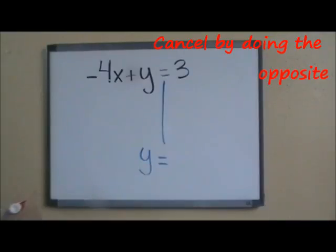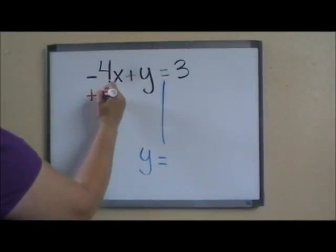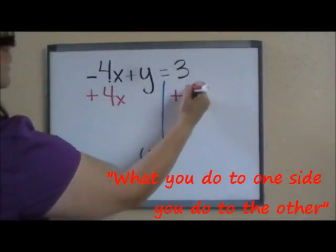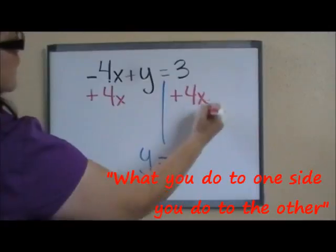The opposite of negative 4x is a positive 4x. And remember what you do to one side, you have to do it to the other, and it reads like that.